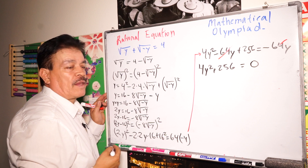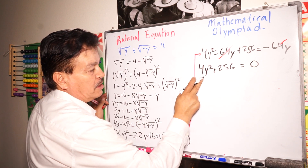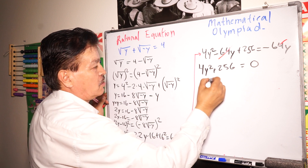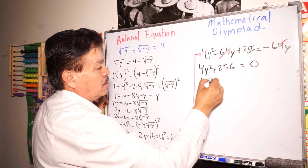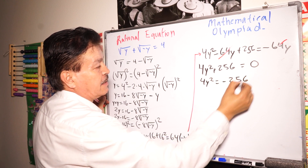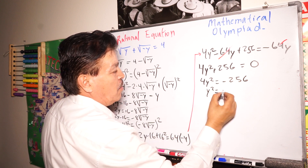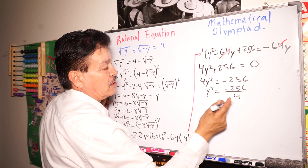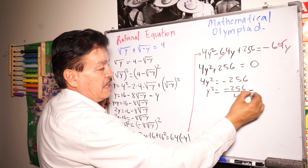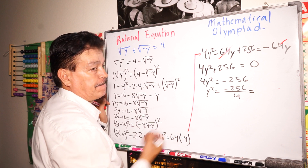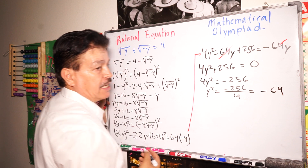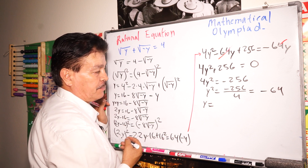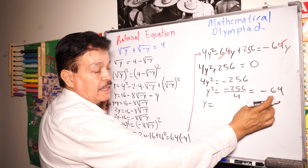Now move 256 to the other side: 4 times y squared equals negative 256. Then y squared equals negative 256 divided by 4. Simplifying, y squared equals negative 64.